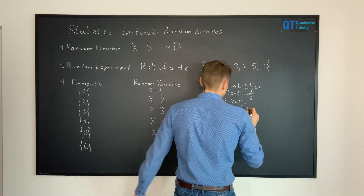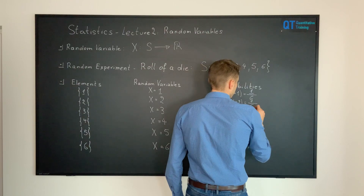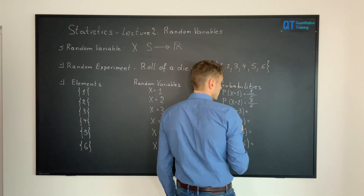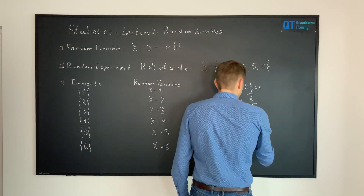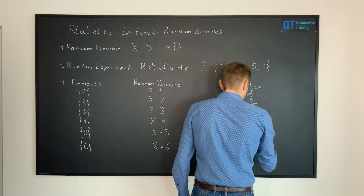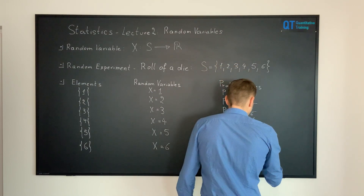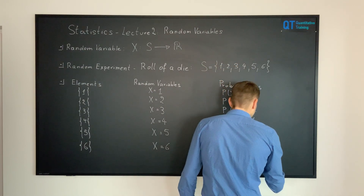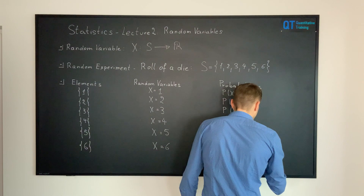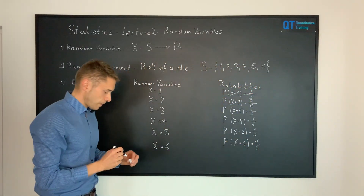The same calculation applies for the second element and all others: one element divided by the sample space of six. So each time we have a probability of one sixth.